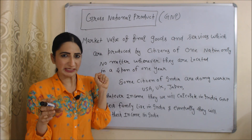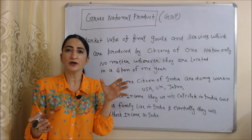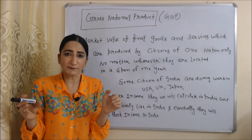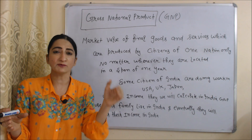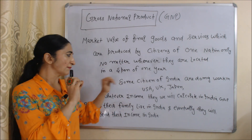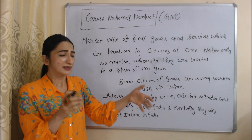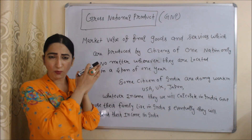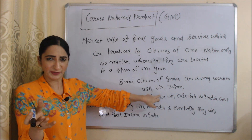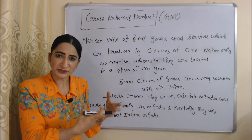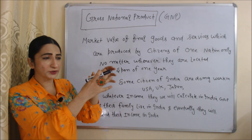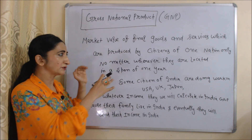Now we are going to talk about Gross National Product — in short, GNP. GNP refers to the market value of all final goods and services which are produced by citizens of one nation only, no matter where they are located. For example, some citizens of India are working in the USA, some in the UK, some in Japan — whatever income they earn will be calculated in India's GNP, not in the USA, UK, or Japan's GNP, because their families live in India and they will eventually send their income to India.